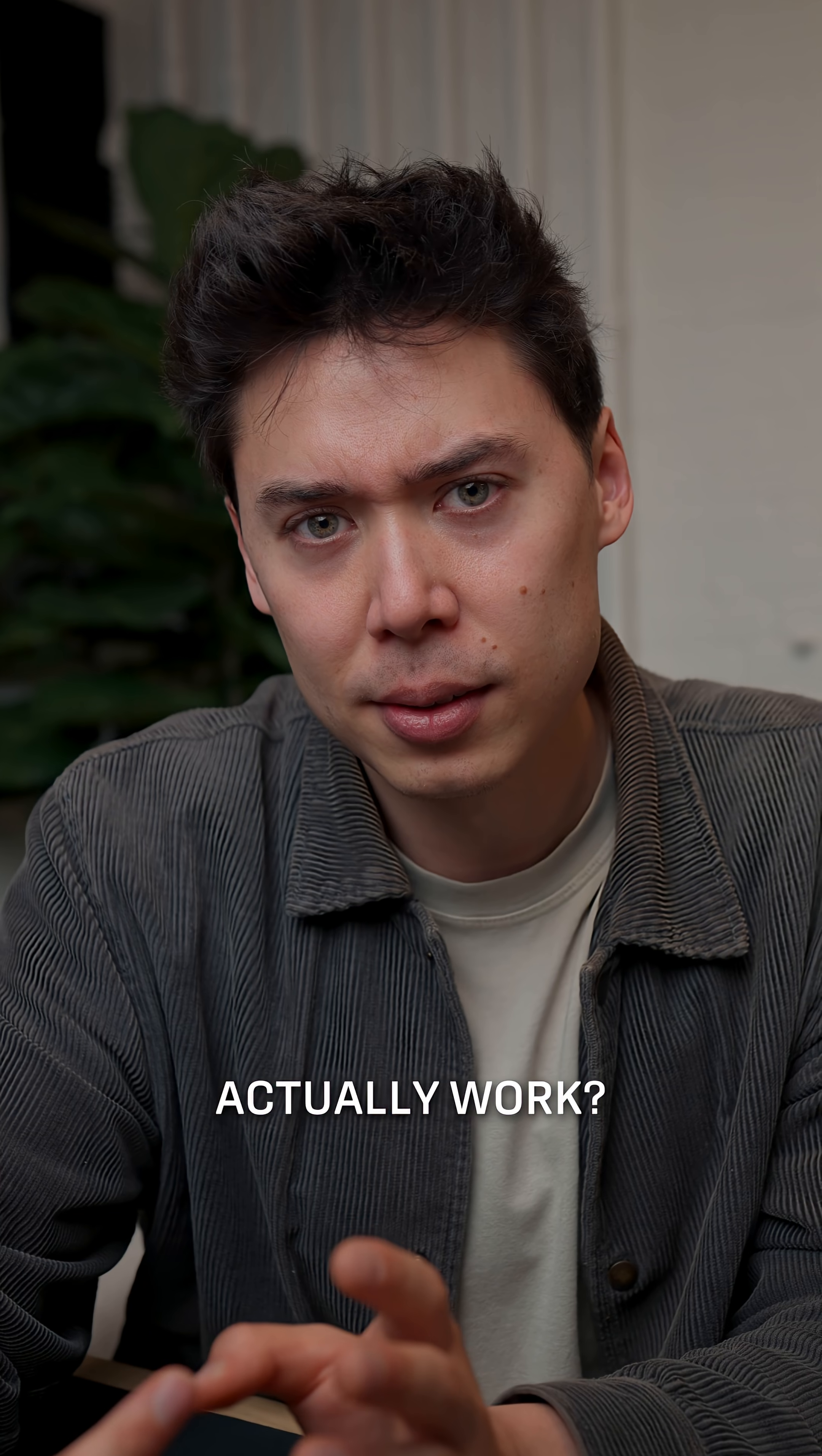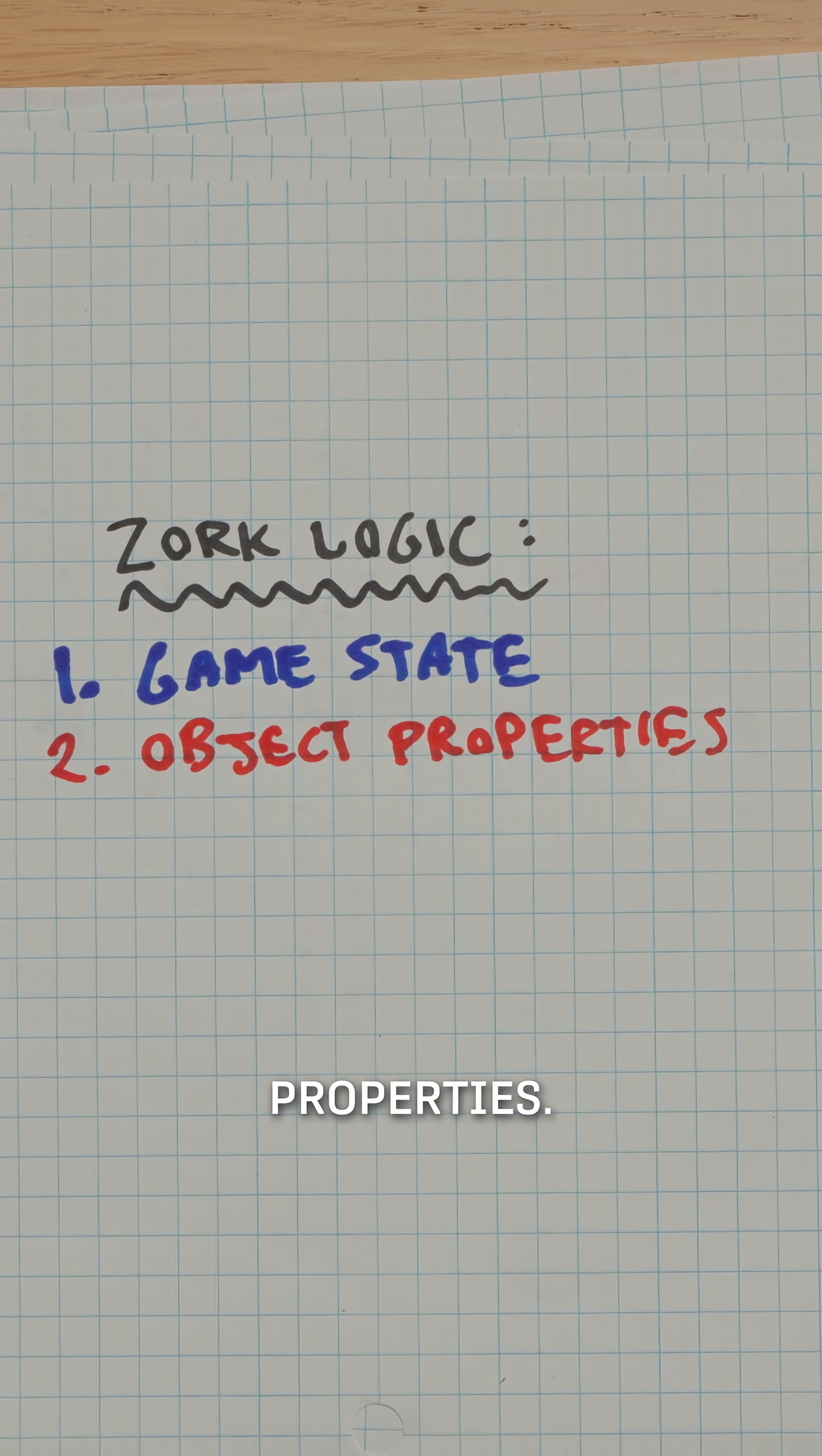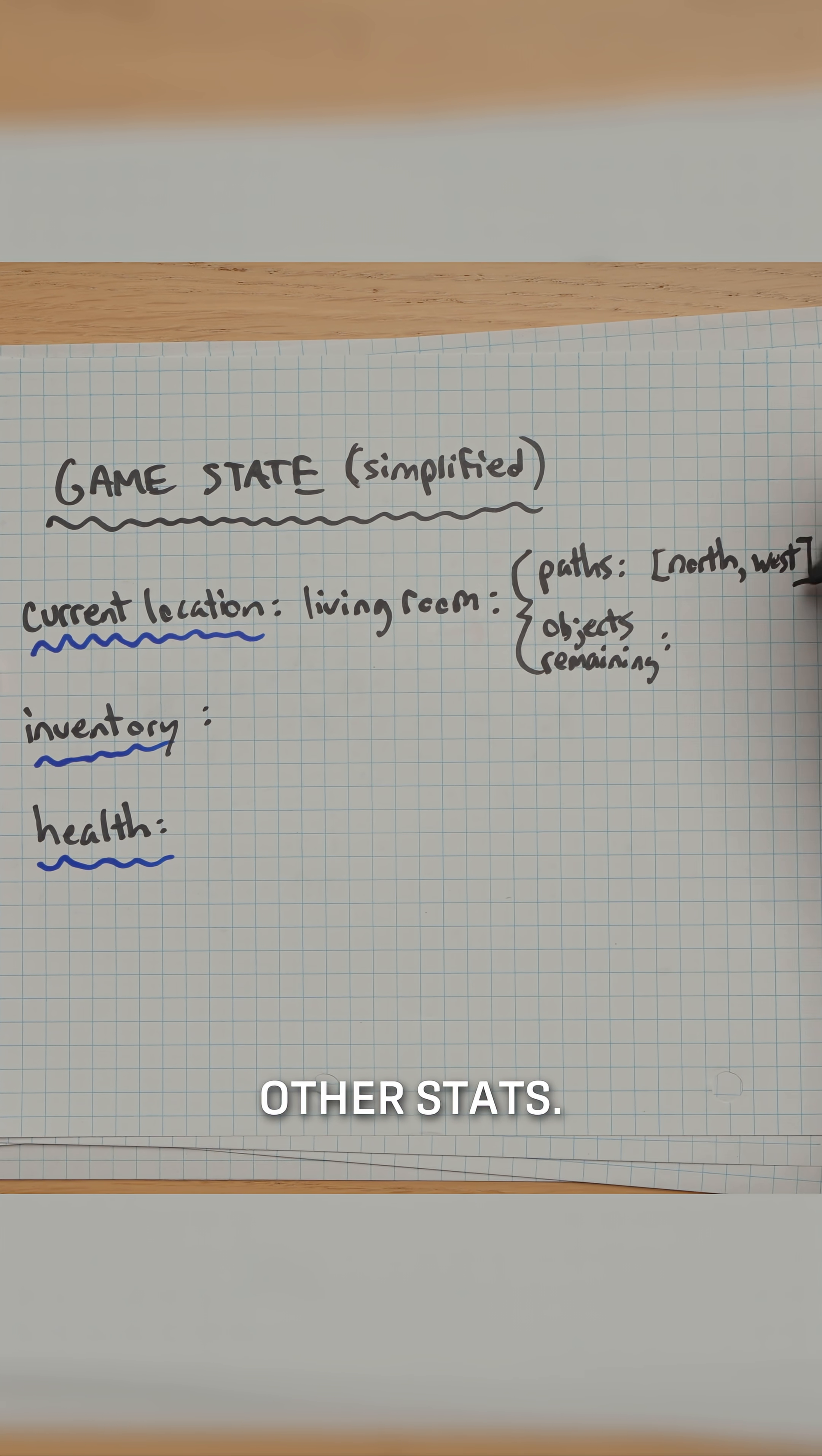But how did it actually work? Zork puts two concepts in play: game state and object properties. Game state is straightforward. You'll keep track of and update the player's current location, inventory, and other stats.